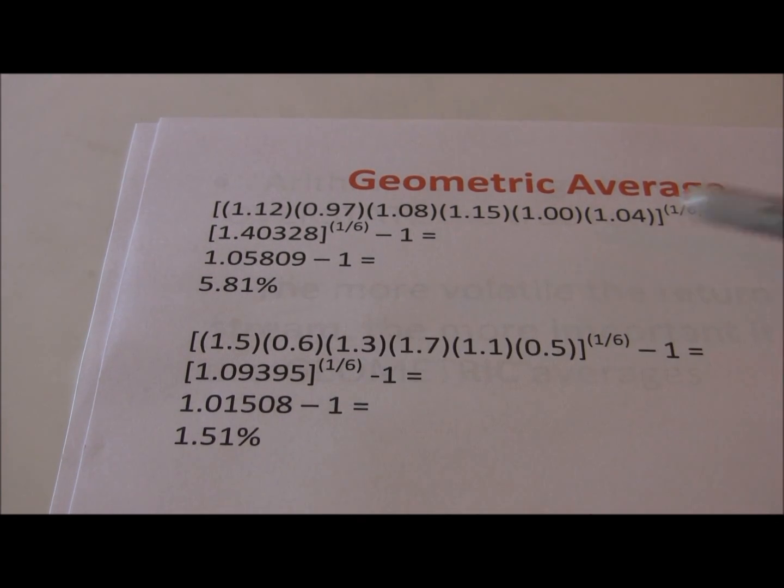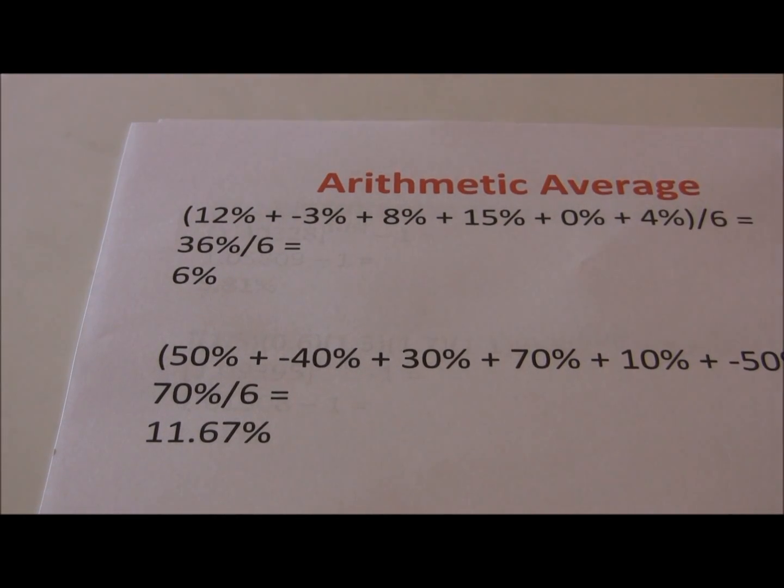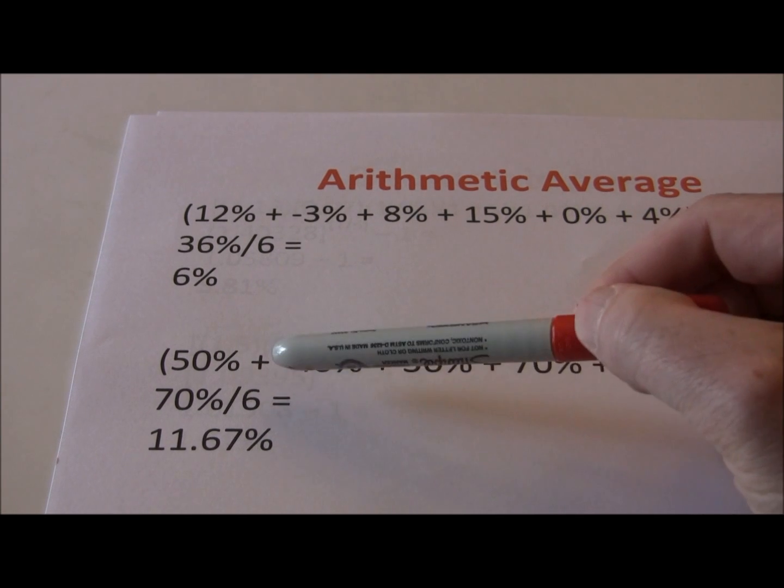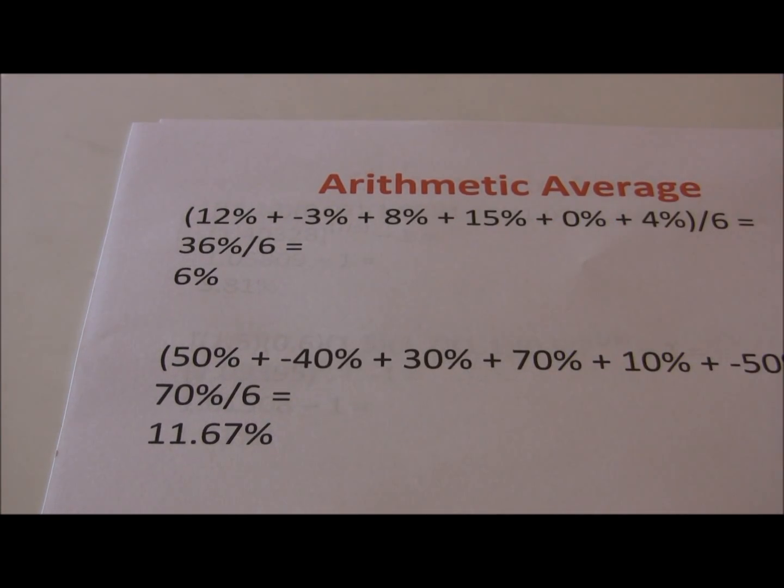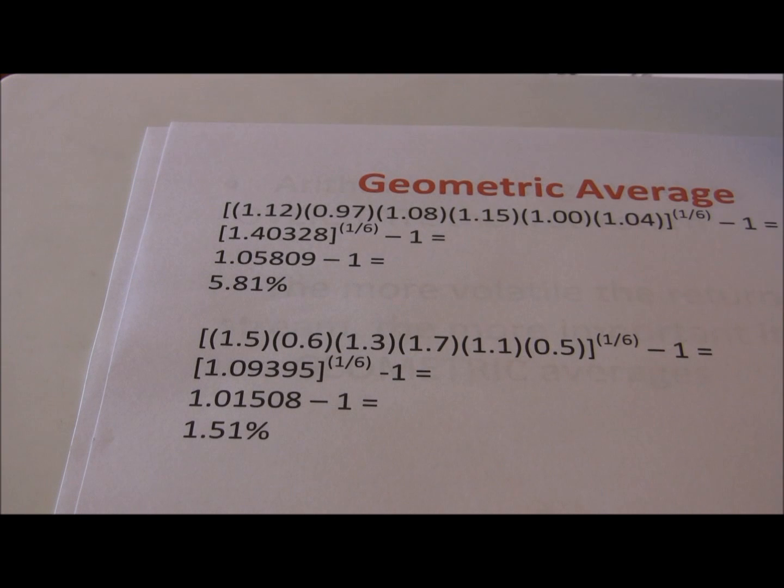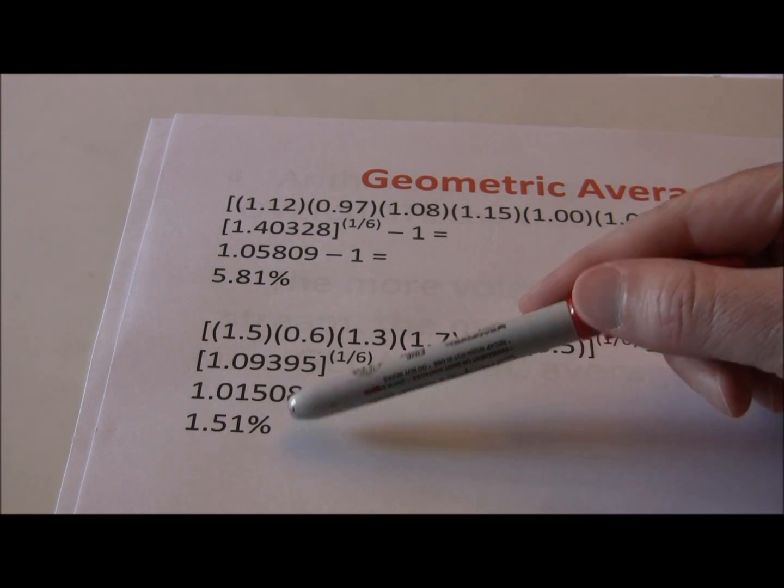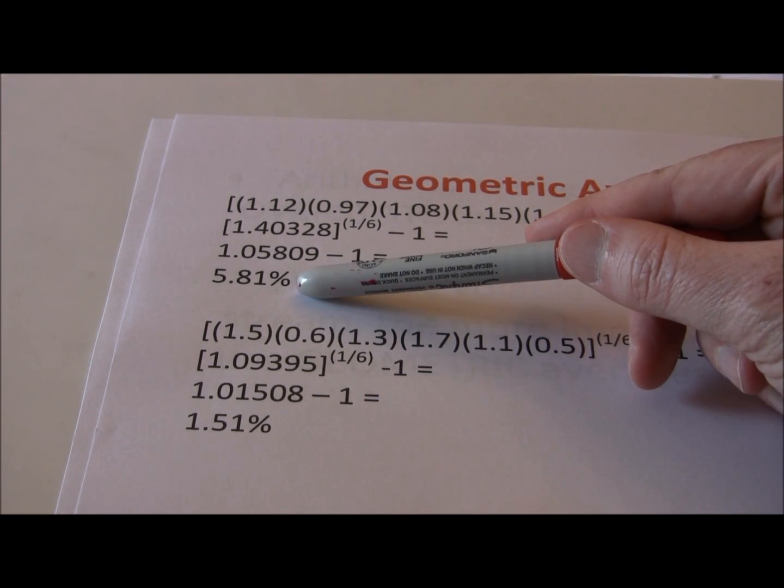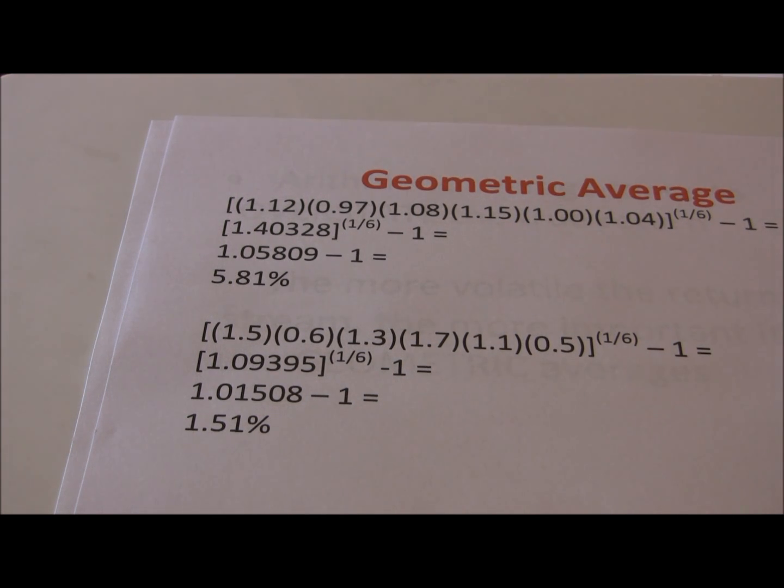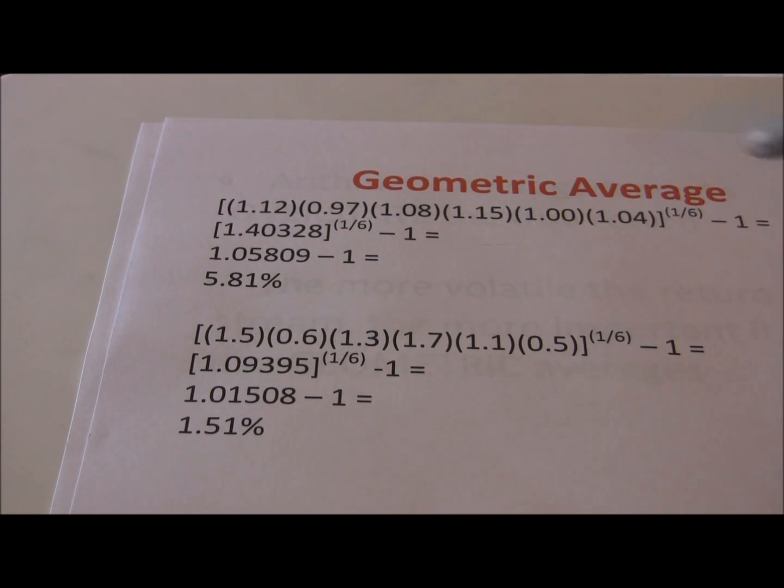That's going to give us 1.51%. Now as you can see, the arithmetic return which we calculated earlier showed us investment A doing much worse than investment B. The geometric return says just the opposite. Geometric return shows investment B at a 1.51% return and investment A at 5.81%. Which one actually did better? The answer is investment A. Geometric return is more reliable.